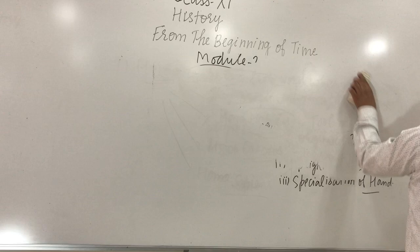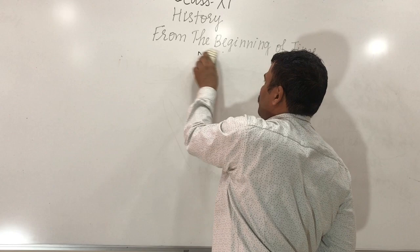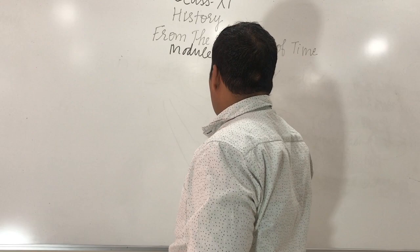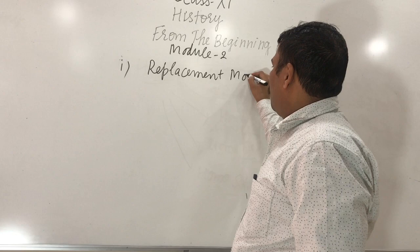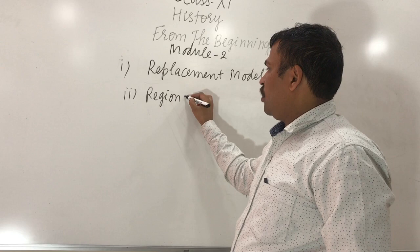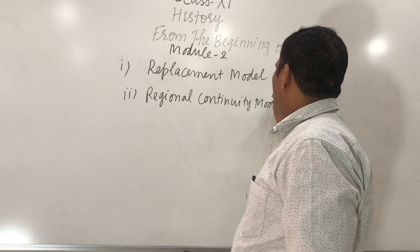Now, how are these things proved? Two models have been given and approved by scholars. The first is the Replacement Model, and the second is the Regional Continuity Model.